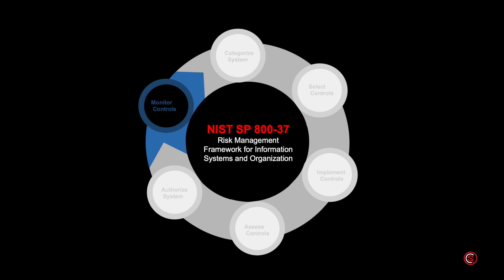Step six is continuous monitoring — maintaining ongoing situational awareness of the information system's security posture. This includes assessing control effectiveness, documenting changes to the system, conducting security impact analysis on those changes, and reporting the security state of the system to designated organizational officials. This step should be integrated into the operations and maintenance phase of the SDLC.